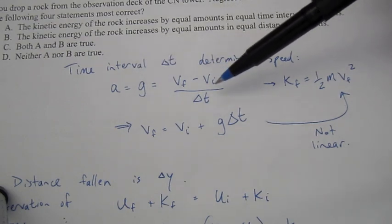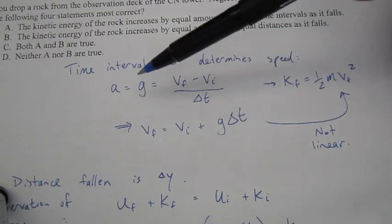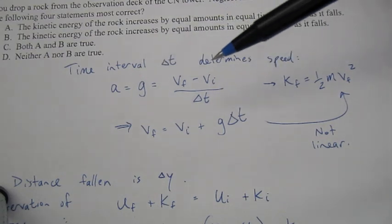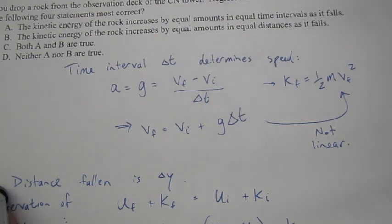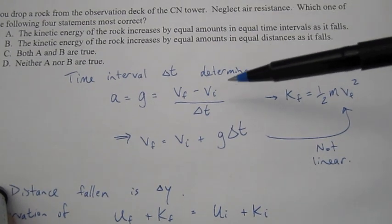We know the change in velocity divided by the change in time is our definition of acceleration. And for freefall, this rock with no air resistance, that's going to be g.